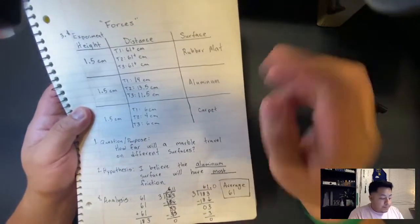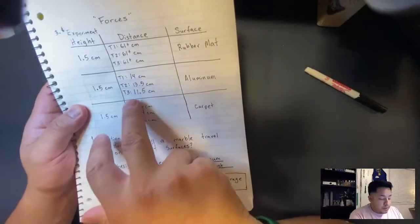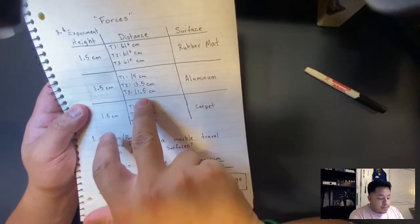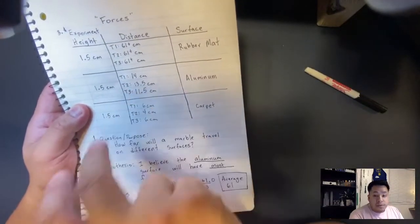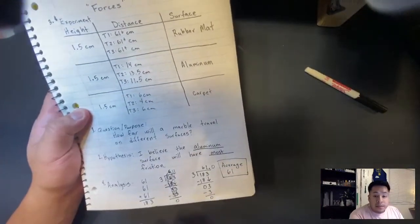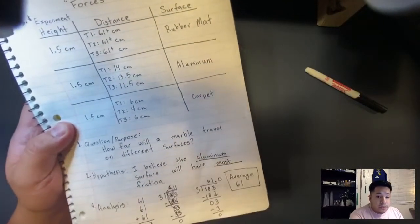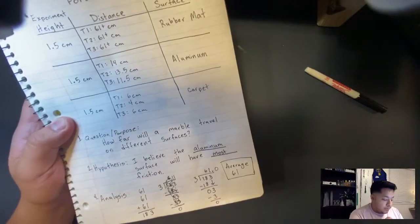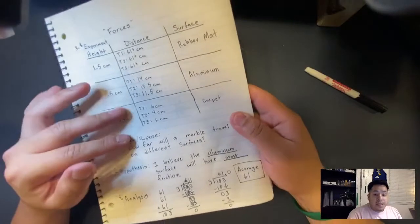For the aluminum, trial one was 14, 13.5, and 11.5. Trial two and three, respectively. Carpet, trial one, six centimeters, four centimeters, and six centimeters. That was my experiment.